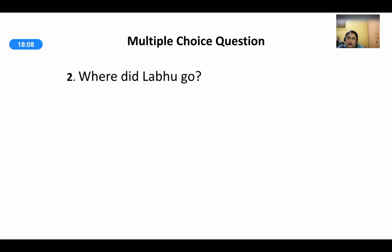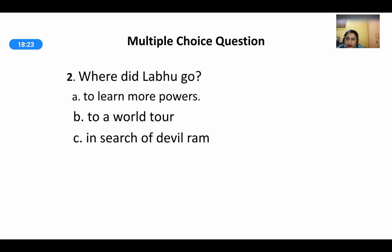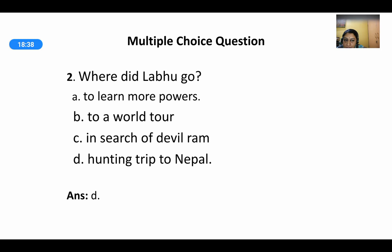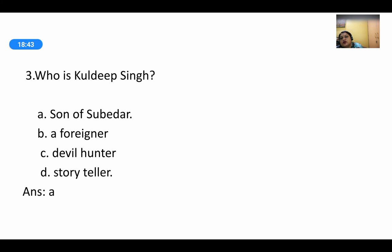MCQ 2: 'Where did Labu go after the break in Labu and Anand's relationship?' Options: to learn more parts, on a world tour, in search of devil ram, or on a hunting trip to Nepal. The answer is option D — a hunting trip to Nepal. Labu went with Kuldeep Singh on a hunting trip to Nepal. MCQ 3: 'Who is Kuldeep Singh?' — He was the son of Subedar Dilip Singh.